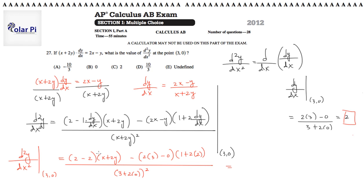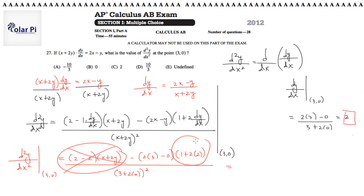So this whole first term goes to 0 — 2 minus 2 is 0, 0 times anything is 0. Then minus: this is 6, and 1 plus 4 is 5, so we have negative 30 in the numerator. The denominator: 3 plus 2 times 0 is 3, and 3 squared is 9. Both 30 and 9 share a factor of 3, so dividing numerator and denominator by 3 gives negative 10 thirds, which is answer choice A.